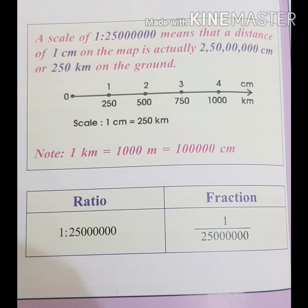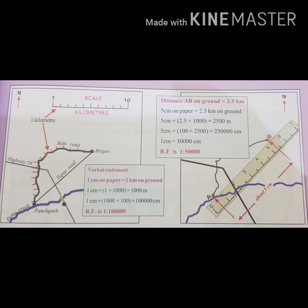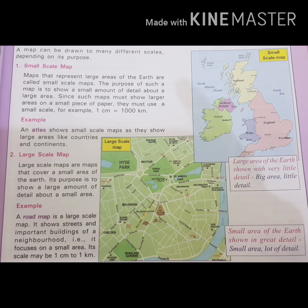For example, when we see that the scale of a map is one centimeter to one kilometer, we mean that one centimeter on the map represents one kilometer on the ground. Maps may be large-scale or small-scale. Large-scale maps depict the geographical features of a small area in detail, while small-scale maps show only the important features of a large area.